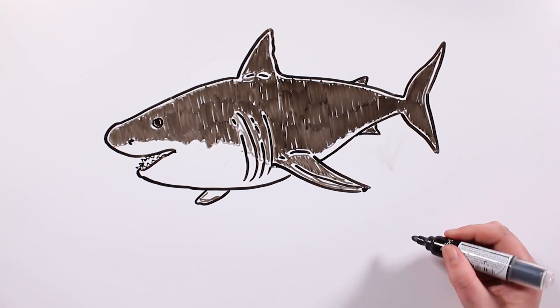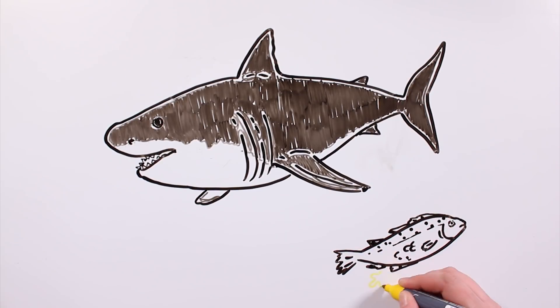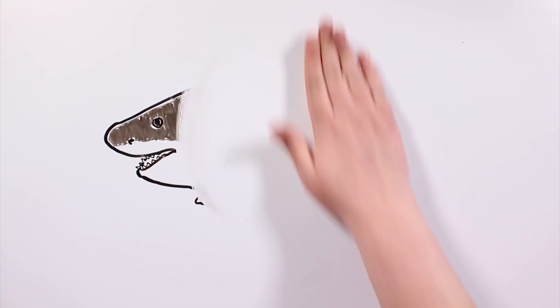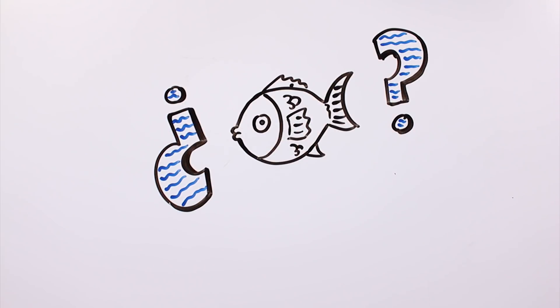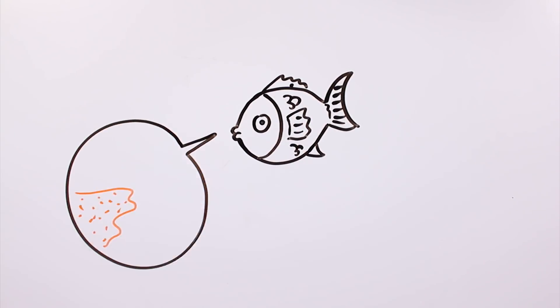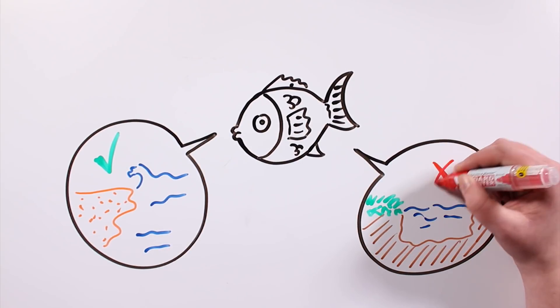Saltwater fish only urinate really small amounts, so the loss of water is limited. So, keeping it short, do fish drink water? Saltwater fish do, freshwater fish don't.